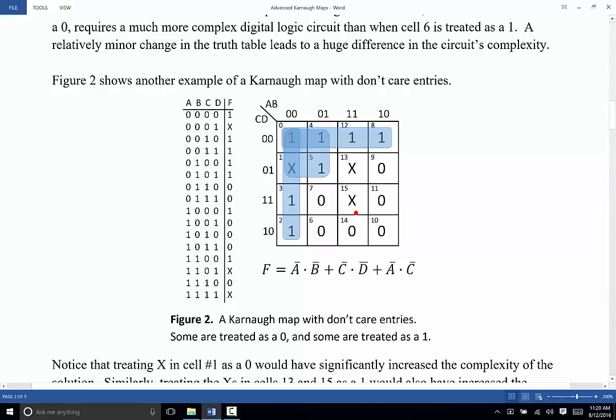Yes, but it would require more logic. It would require a more complex solution. Could we treat cell number one as though it's a zero? Yes, we could, but again, it would take more complex logic because we'd have more groups and or smaller groups. And our goal is always to get the fewest and the largest possible groups.